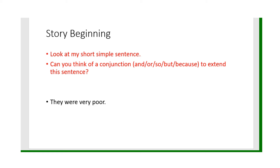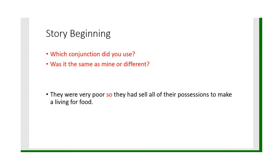Now look at my short simple sentence. Can you think of a conjunction? The coordinating ones are 'and,' 'also,' 'but,' then we've got the subordinating one 'because.' They were very poor — you might use 'because they had no money,' because yeah, they didn't have any money. They were very poor because they had no money, so they had to sell all of their possessions to make a living for food. Their possessions — can you remember? That's belongings. So the more wider vocabulary you know, the more you can use.